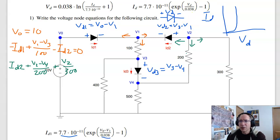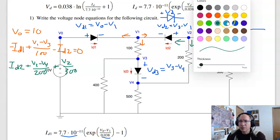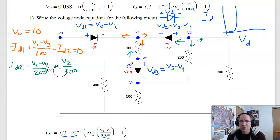At node 3, current up, current down, current left equals 0. So at node 3, V3 minus V1 over 100, plus the current left, V3 over 400, plus the current down, ID3, is 0.